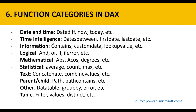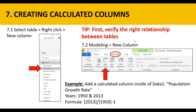For example, for time intelligence we have dates between, first date, last date — you guys can explore more about these functions, but for this tutorial we're just listing them. Now let's learn how to create a calculated column. There are two different ways. The first one: select a table, right-click, and select new column. The other way is to go to modeling and then select new column.